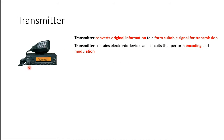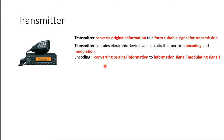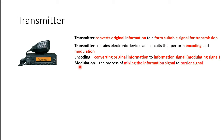The transmitter has many components inside it. Let's define encoding: encoding is the process of converting original information into an information signal, also called a modulating signal. For example, our voice — once we speak into the transmitter, it undergoes the process of encoding and our speech is converted into what we call the information signal.